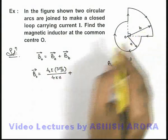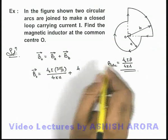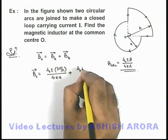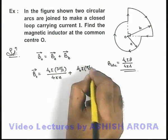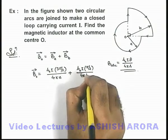Plus magnetic induction due to that of radius b. The arc due to radius b is μ₀ i, the angle subtended is π/2, divided by 4π b.